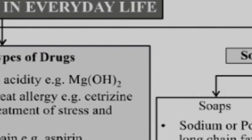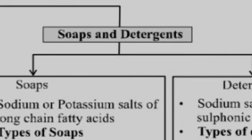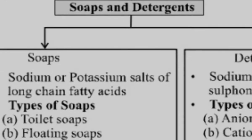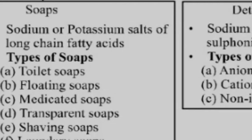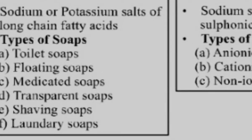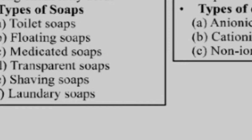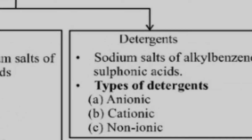The next part of this chapter is soaps and detergents. Soaps are sodium and potassium salts of long chain fatty acids. Types of soaps include toilet soaps, floating soaps, medicating soaps, transparent soaps, shaving soaps, and laundry soaps — we can classify soaps in different categories based on their uses. Detergents are sodium salts of alkyl benzene sulfonic acid.